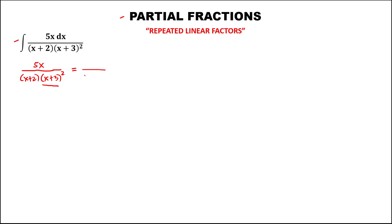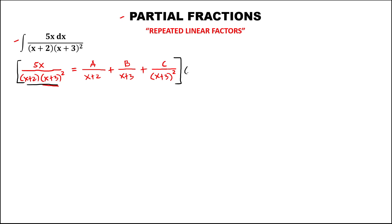this becomes A over (x+2), plus B over (x+3), plus C over (x+3) squared for the repeated linear factor. Then we need to multiply this whole equation by the denominator — times (x+2) times (x+3) squared — and distribute to every term.